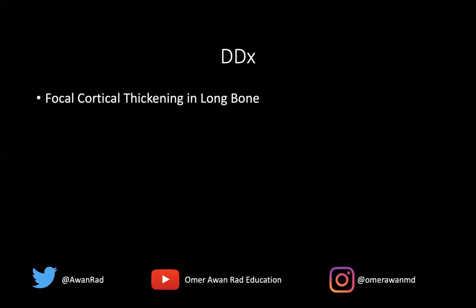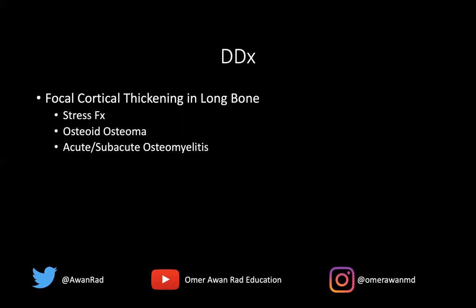It's helpful to discuss the differential for both focal and diffuse cortical thickening of a long bone. For focal cortical thickening — as in case one when I showed a bisphosphonate fracture — the differential includes stress fractures, healing fractures with callus formation, and osteoid osteoma, which is a bone-forming tumor in young individuals presenting with night pain relieved by aspirin, showing focal cortical thickening with a central lucent nidus with calcification. Acute and subacute osteomyelitis can also result in focal cortical thickening.